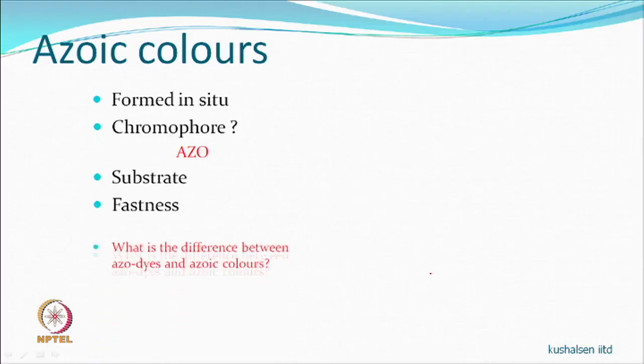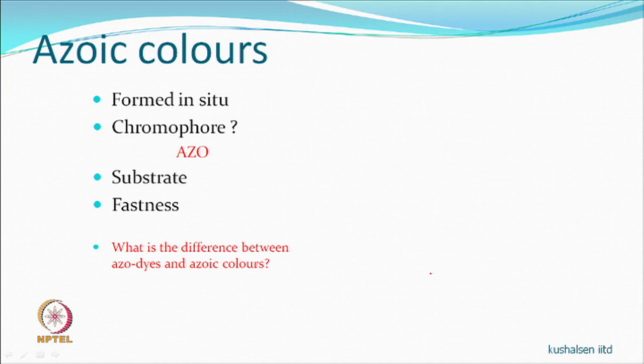For azoic colors, rubbing fastness — both wet and dry — is the main concern. Otherwise, they are water-insoluble compounds; with good padding, temperature, and conditions, wash fastness should not be a problem. The difference between azoic dyes and azoic colors: azoic colors are formed in situ, while azoic dyes are pre-formed and can be dispersed, reactive, direct, or other classes.